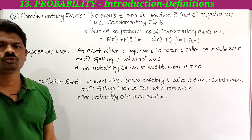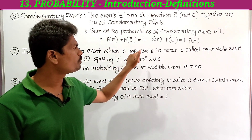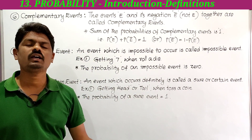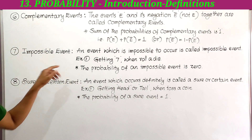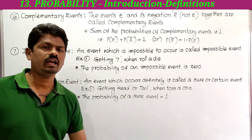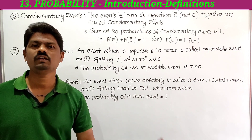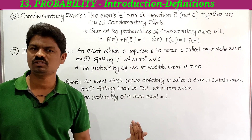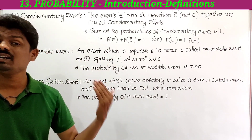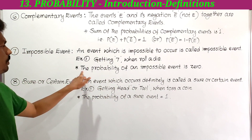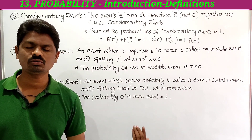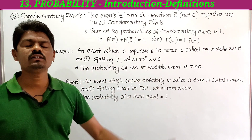Next, impossible event. As its name says, an event which is impossible to occur is called an impossible event. For example, getting 7 when rolling a die is impossible. The probability of an impossible event is 0.